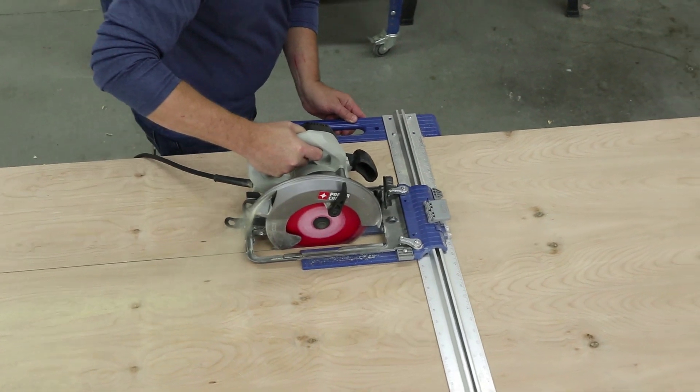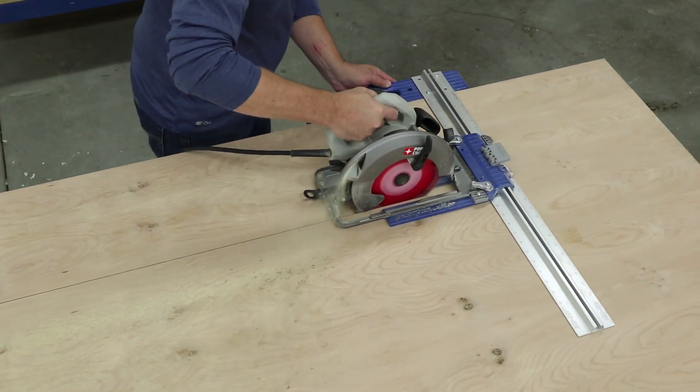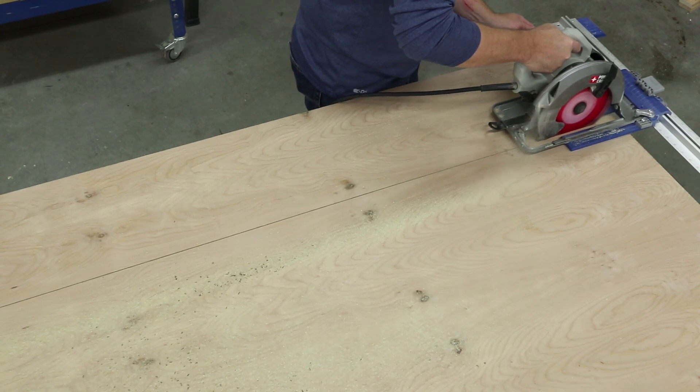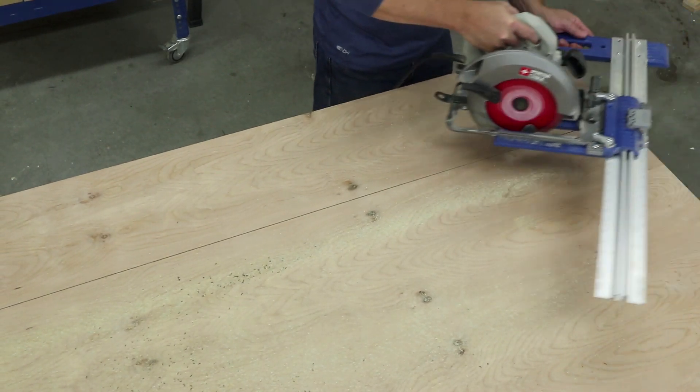As you push the saw forward with your dominant hand, use your other hand to hold the edge guide against the sheet. That positions the saw so you don't have to worry about trying to follow a cut line.